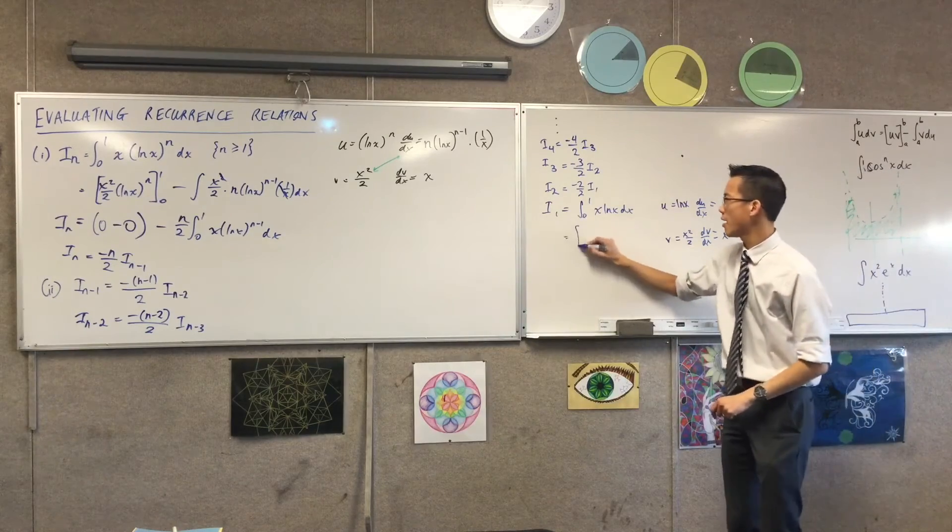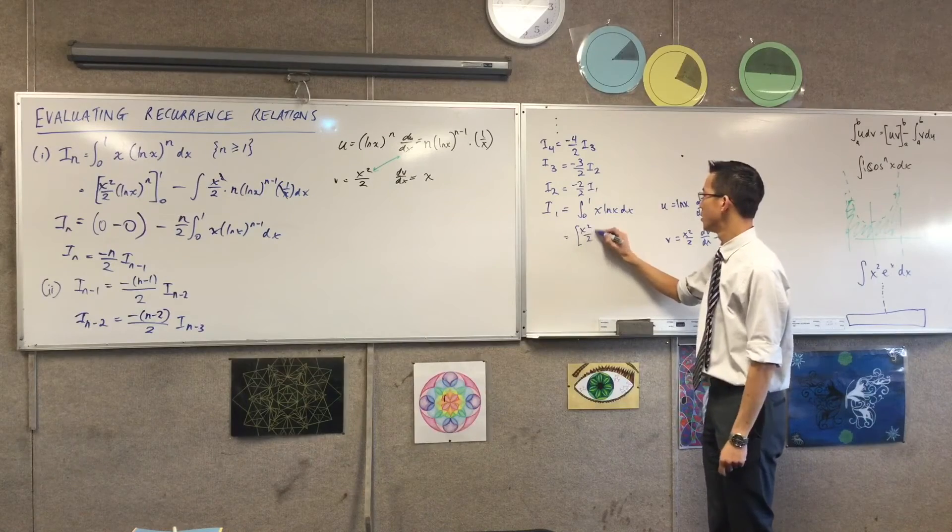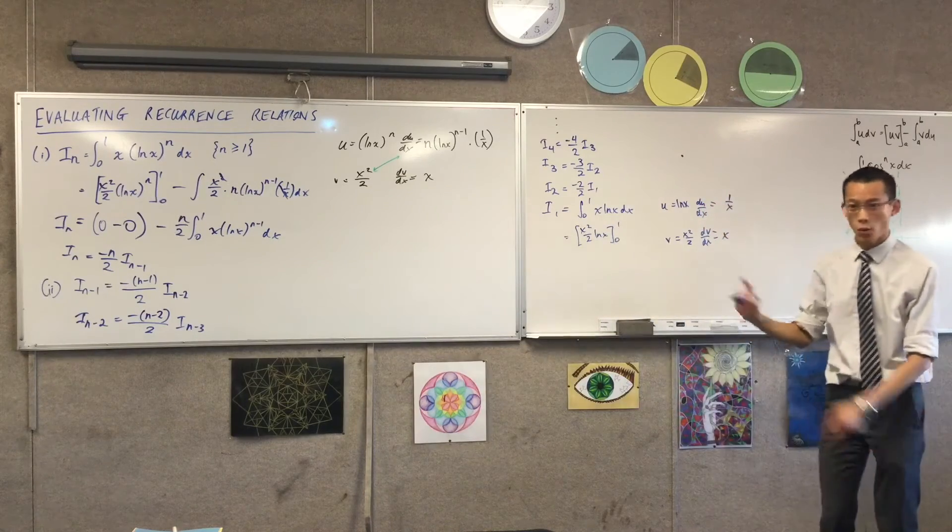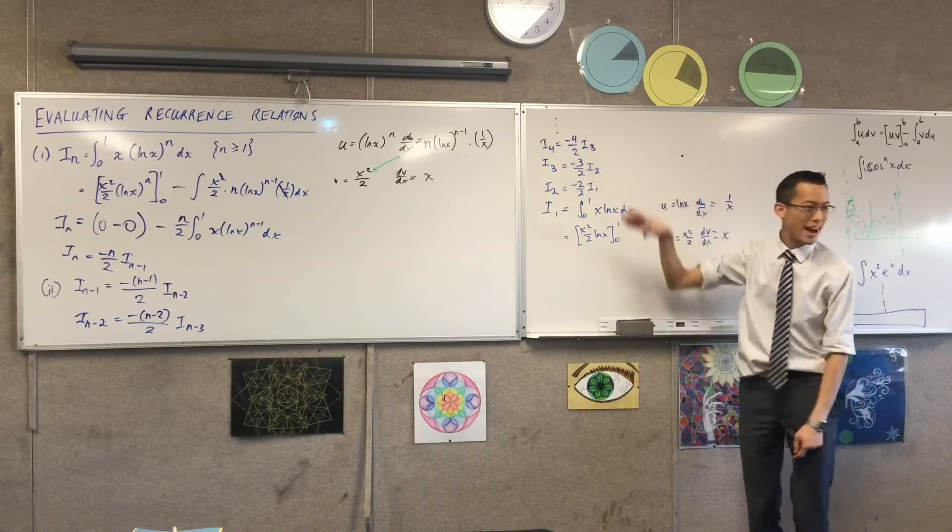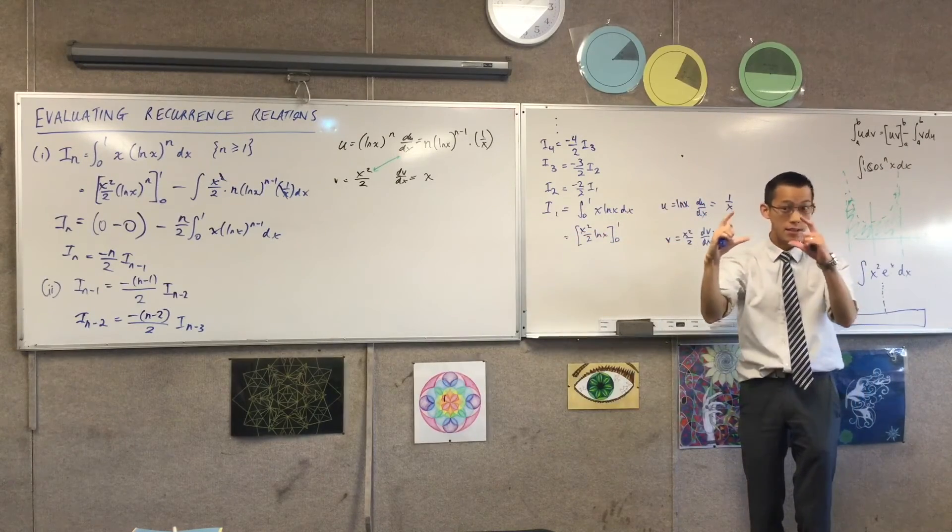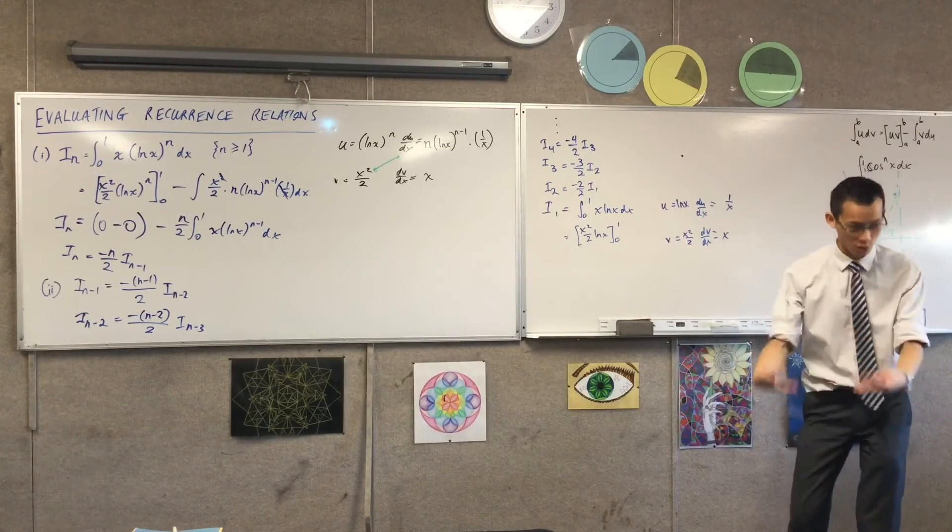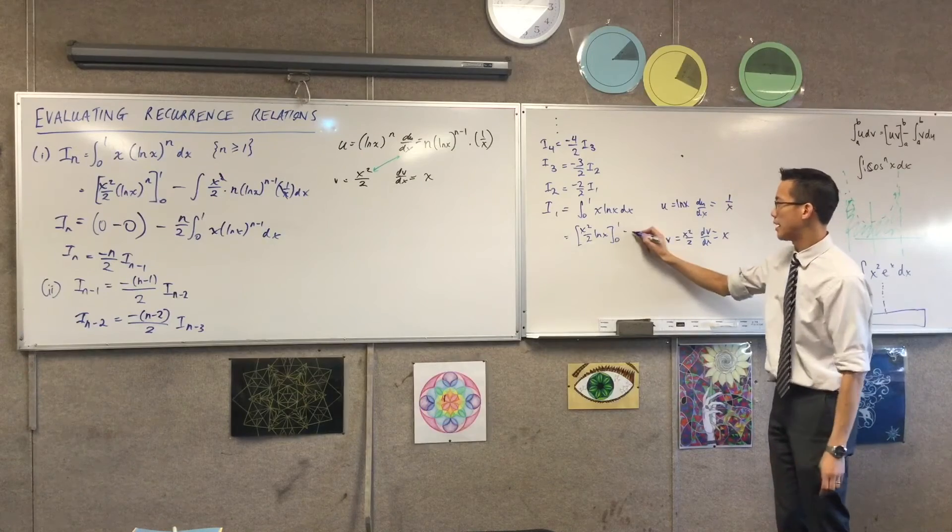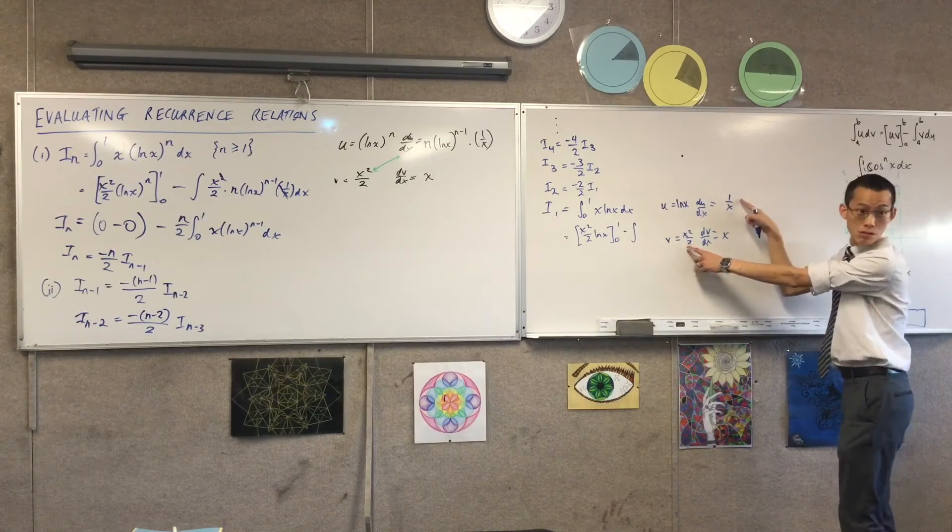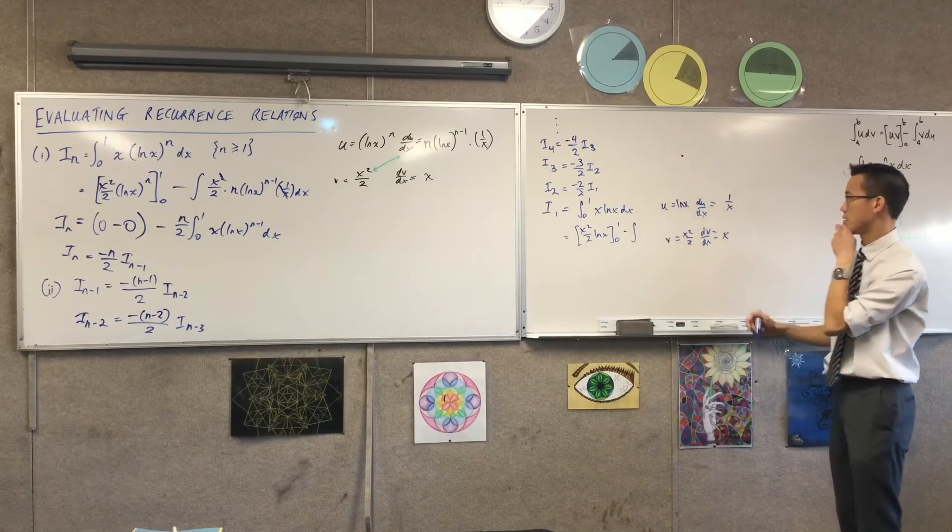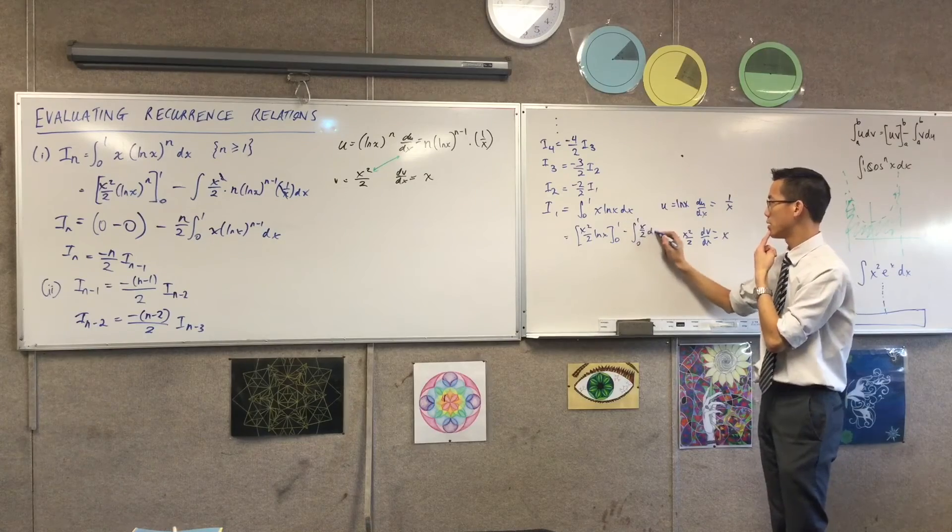So, here I'm going to have this guy from 0 to 1. Which, again, gives us that same weird problem. You see what I mean? All the way down, all of those uv's from 0 to 1, they always evaluate out to 0 once you deal with the limits, which I'm kind of glossing over a little bit. Here, I've got the integral of v du, which is, what is it? x on 2? From 0 to 1 dx. Are you happy with that?